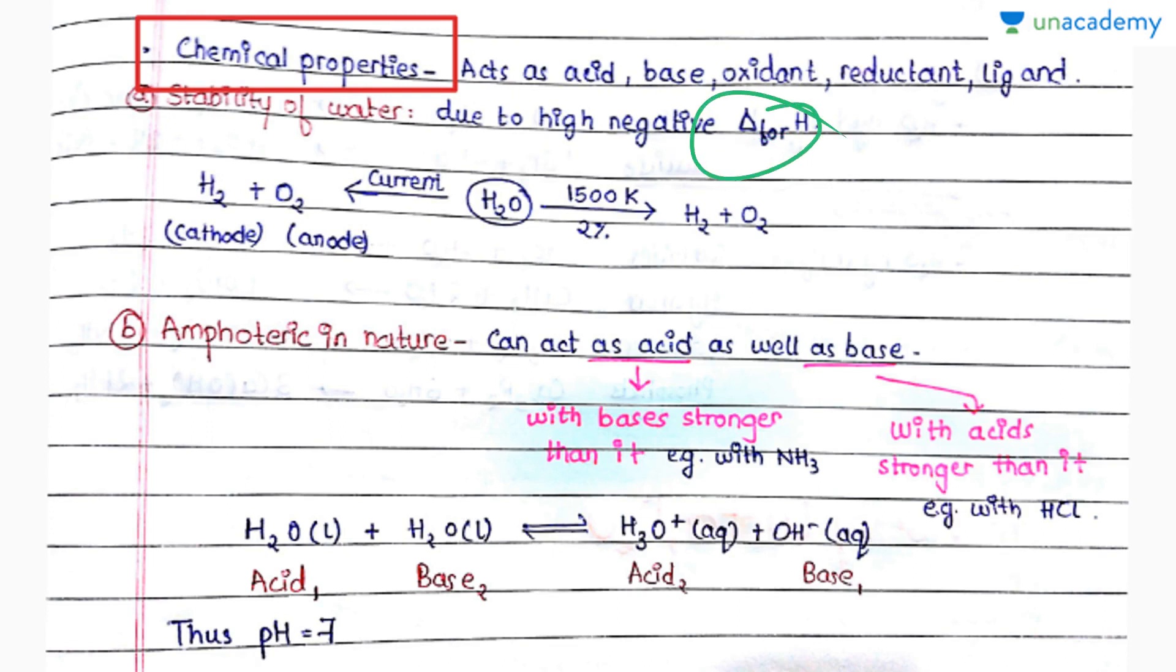Chemical properties: it is highly stable because of highly negative enthalpy of formation. If we heat it to 1500 Kelvin, it is 2% dissociated. And when we pass current—that is electrolysis—H2 and O2 form.